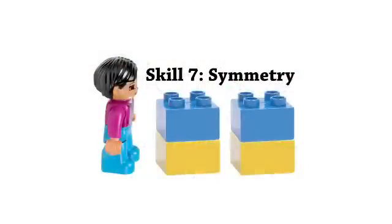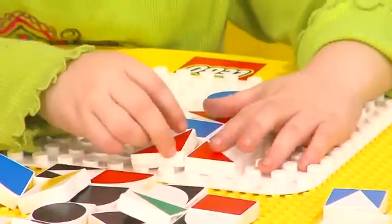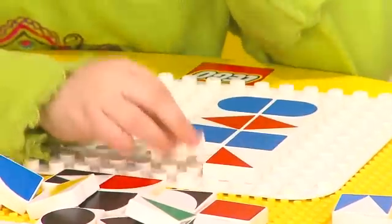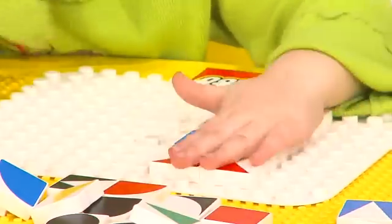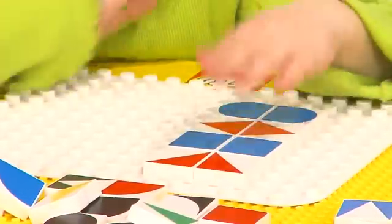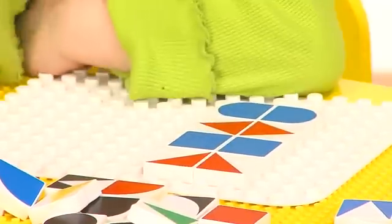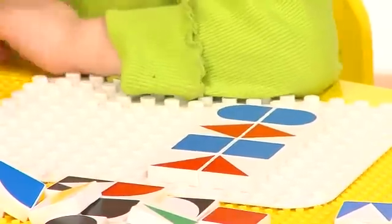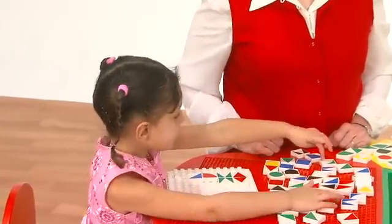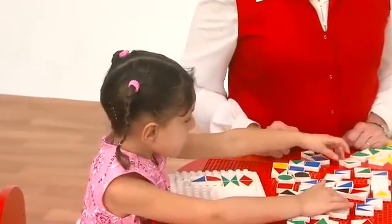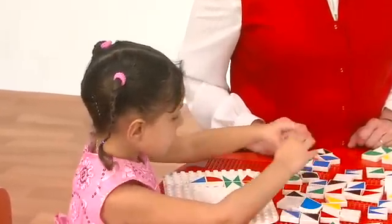Skill 7: Symmetry. Students can create a symmetrical shape by completing the other side of a given shape. Once students understand the idea, they can create their own symmetrical shapes.